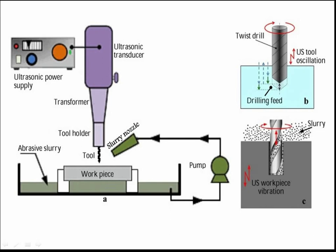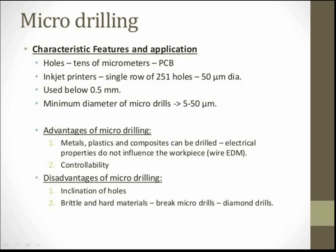This figure shows the main functional parts of a micro-drilling machine. An ultrasonic transducer is used for micro-tool feeding and to establish the peck-cycle mechanism. Abrasive slurry is used to remove micro-chips from the workpiece surface. Holes of tens of micrometers diameter can be made, typically used for printed circuit boards (PCB), micro-diameter holes for inkjet printers, and for drilling holes below 0.5 mm. Advantages: electrical properties do not influence the workpiece; any metals, plastics, and composites can be drilled; high controllability over the process. Disadvantages: chance of inclination of holes, brittle and hard materials may break the drill bits (diamond drills can be used for brittle materials).